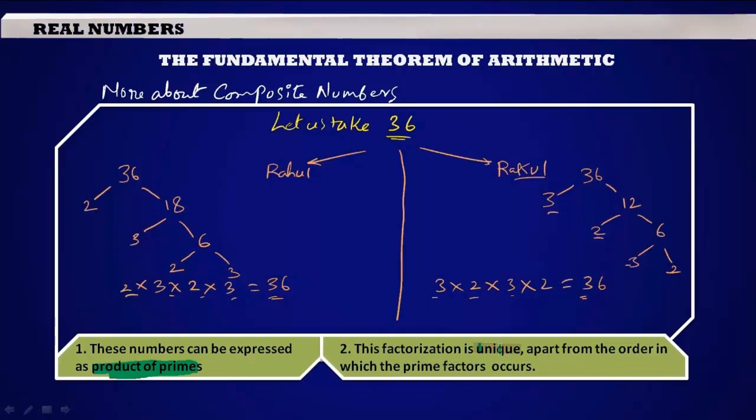What is the second interesting thing that we find here? The factorization of the composite number is unique except in order. Here we see the factorization of 36 in both cases - in case of Rahul and Rakul, the factors are same but the order is different.